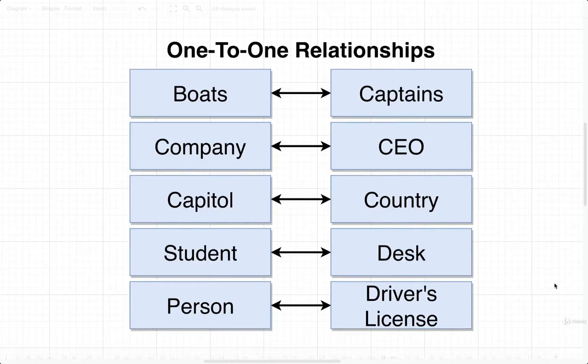So these are all examples of one-to-one relationships. In a one-to-one relationship, there is exactly one record that has a relationship to exactly one other record, and the opposite is true as well. When I describe that with words, it doesn't make a lot of sense, so let's just take a look at a couple of examples and I think you'll get the idea of a one-to-one relationship rather quickly.